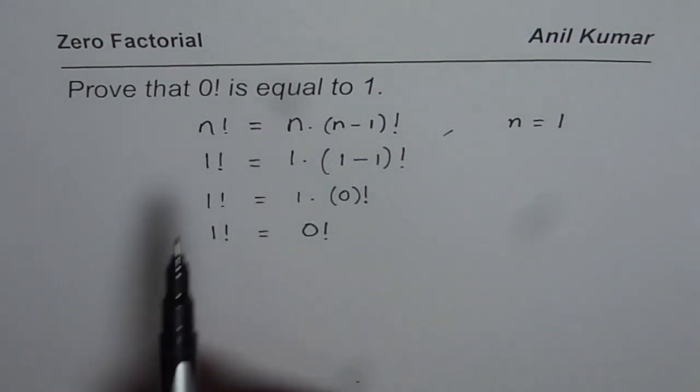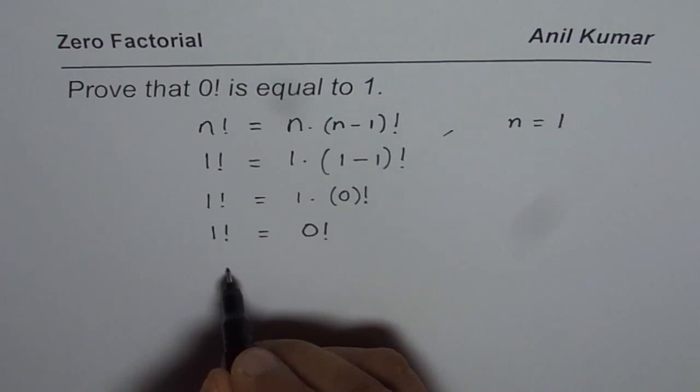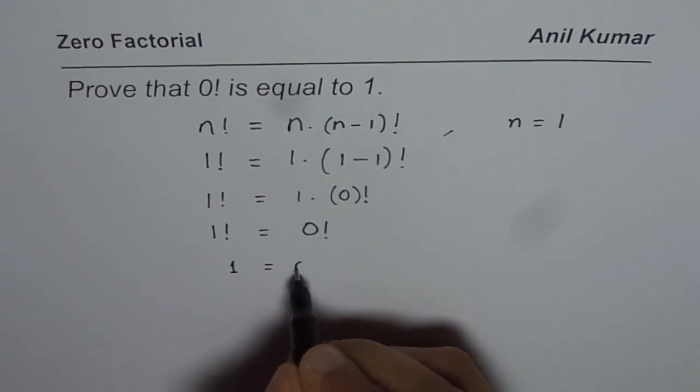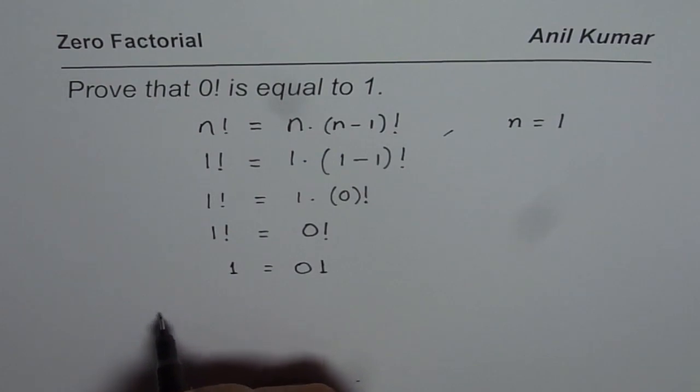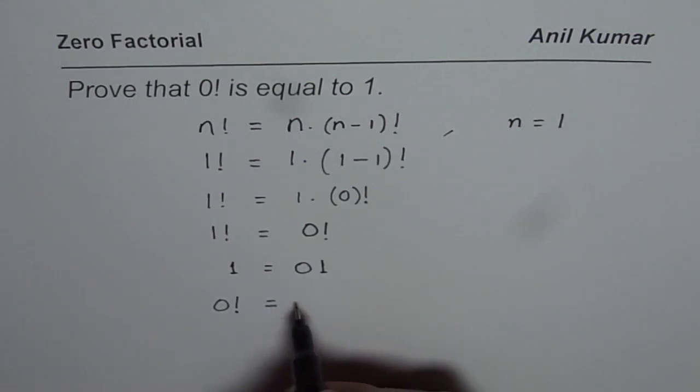So, from here, you can prove that 0 factorial is 1 factorial or you could also say that 1 is equals to 0 factorial or we have proven that 0 factorial is indeed equal to just 1. Do you get an idea, right?